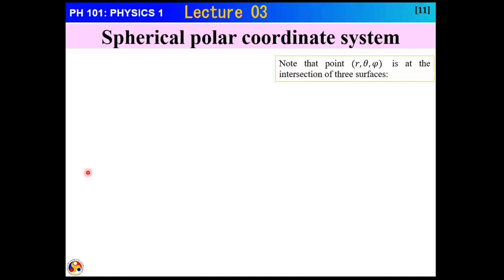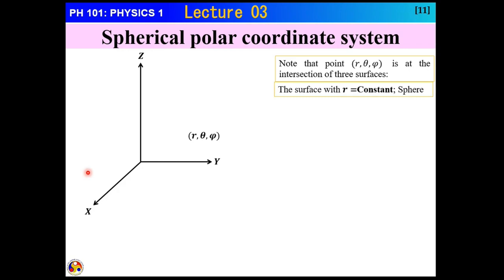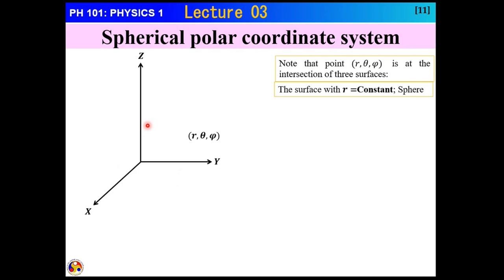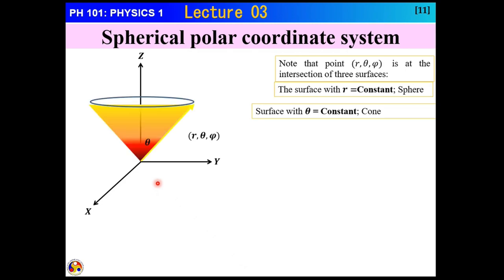R, theta, and phi are at the intersection of three surfaces. Any point in three dimensions is defined by the intersection of three surfaces. The first surface, R equal to constant, is the locus of all points at a constant distance from the origin — this is a sphere. The second surface, theta equal to constant, is the locus of all points at a constant angle from the z-axis — this is a cone.